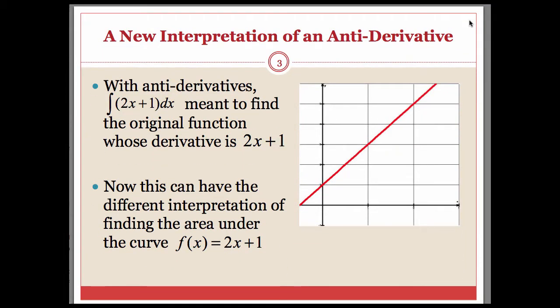Back when we were talking about antiderivatives, remember we had something like this, and we would read this as the antiderivative of 2x plus 1 dx. That meant to find the original function whose derivative is 2x plus 1, using the power rule for antiderivatives. Now we're just going to look at a slightly different interpretation, instead of finding the original function, we're going to think of it as finding the area under the curve f of x equals 2x plus 1.